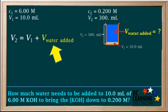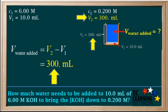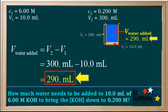We rearrange this equation to solve for the volume of water added. And we get the volume of water added equals V2 minus V1, which is 300 milliliters minus 10 milliliters, which equals 290 milliliters.